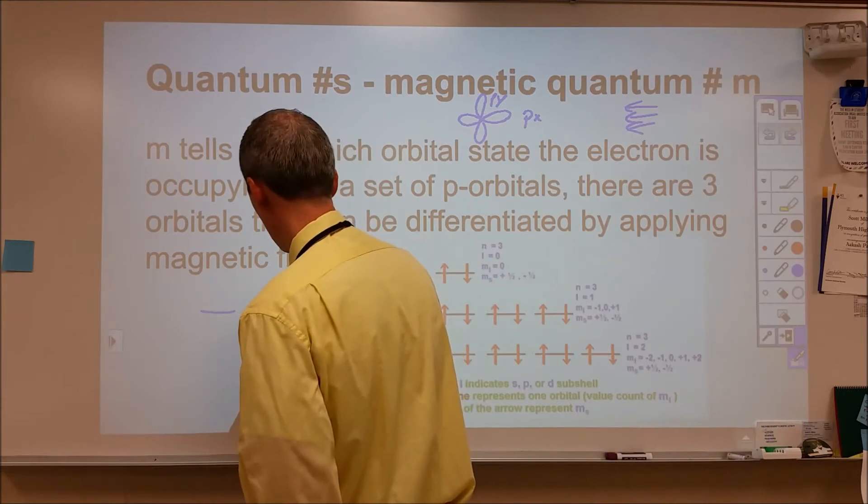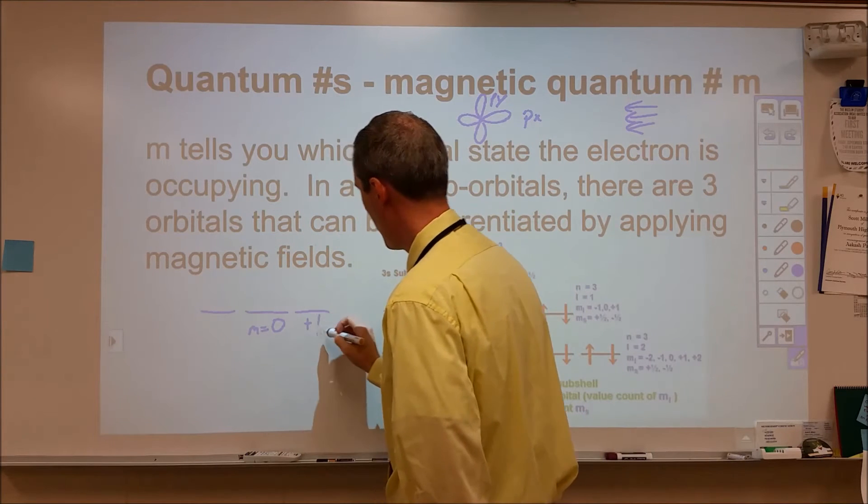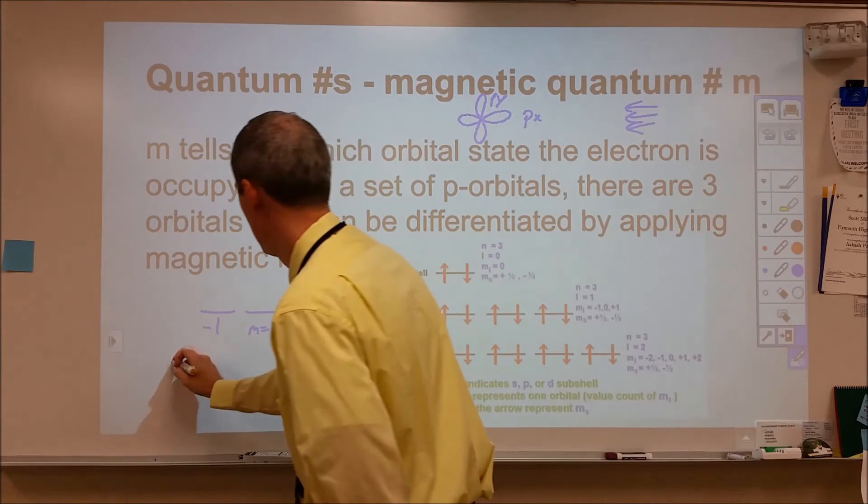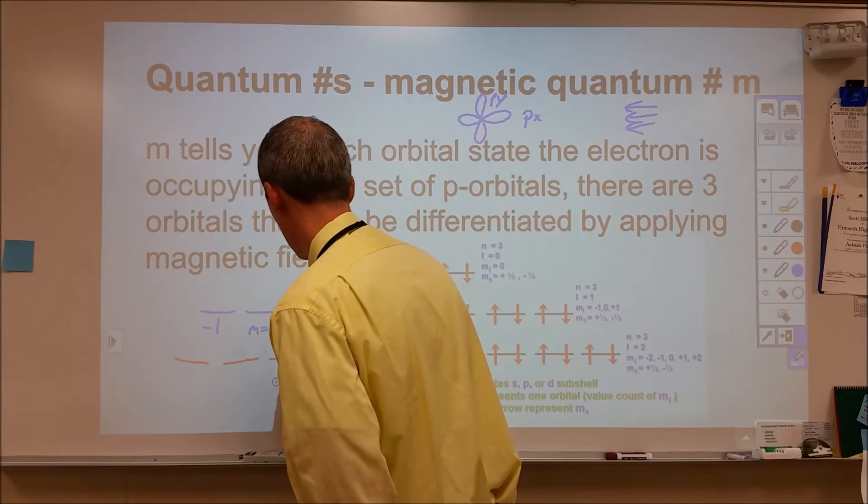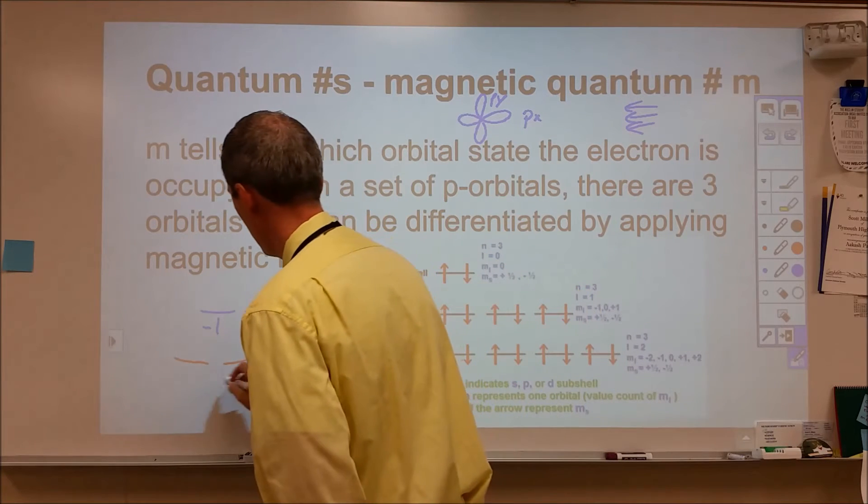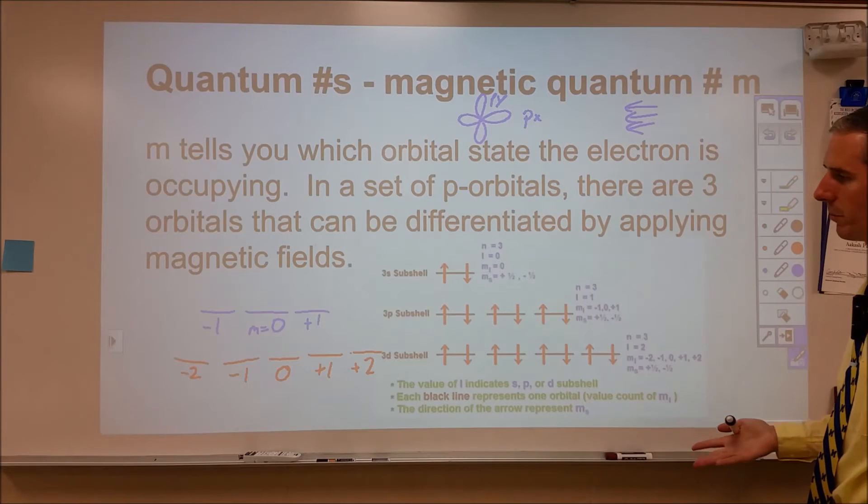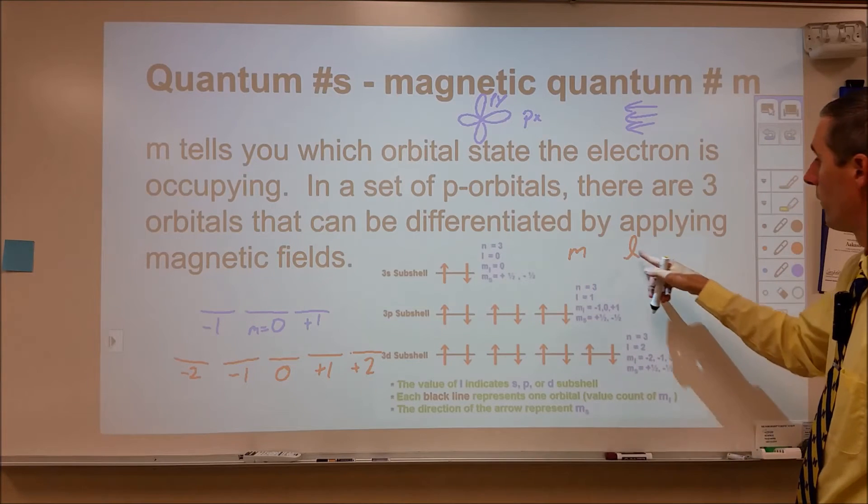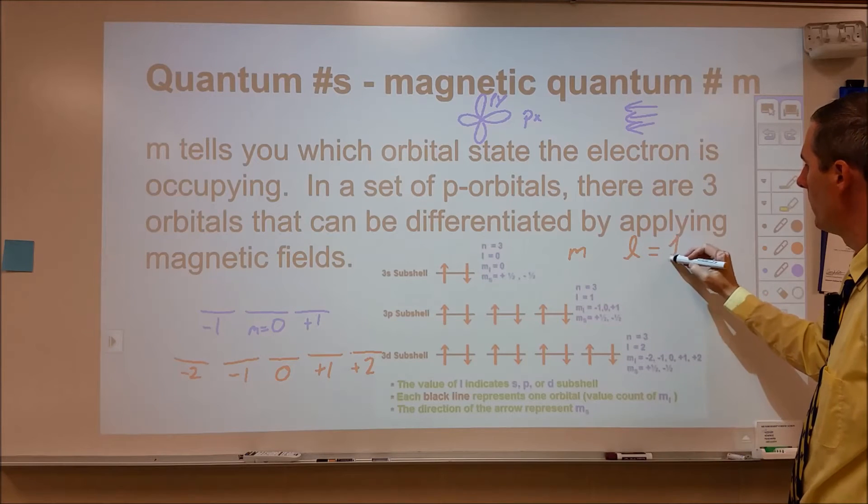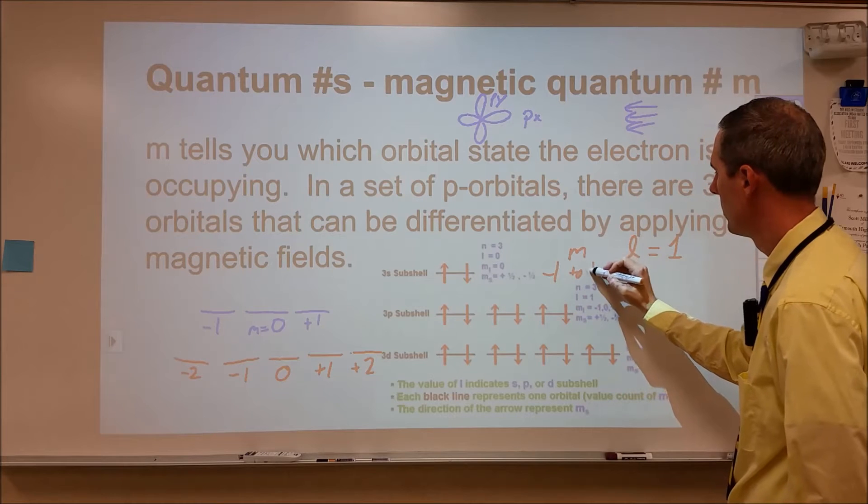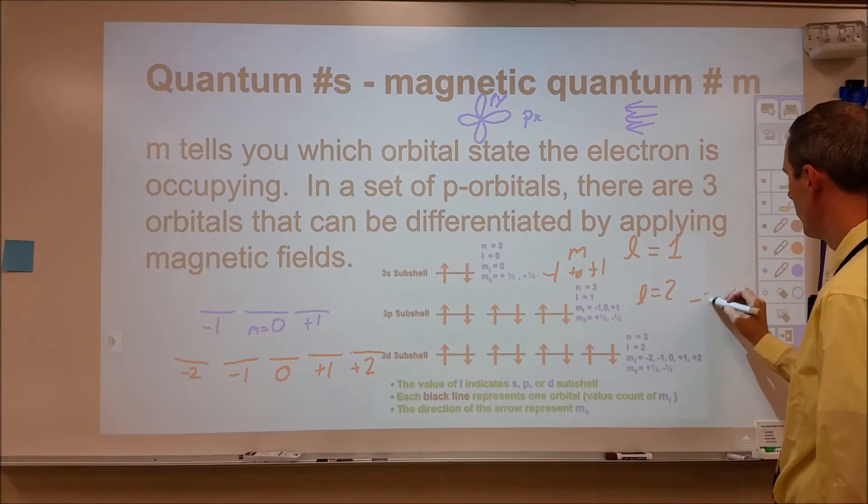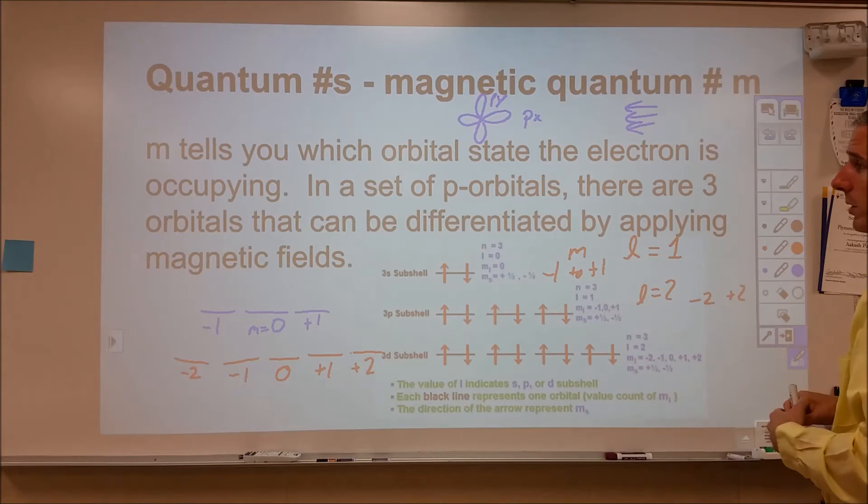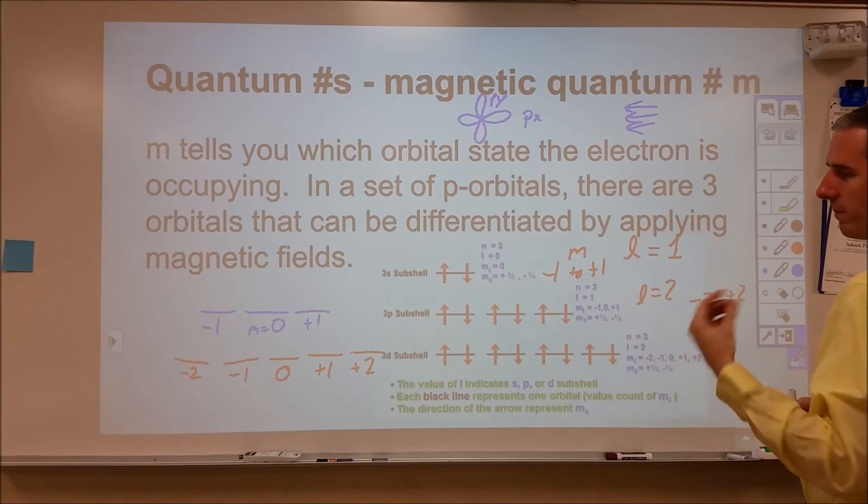And so m is our representation of which of those three there are. Now our way of numbering them is we start with m equal to zero and then we go up and down by ones. So for p orbitals we have a minus one, a zero and a plus one. For a set of d orbitals we have five degenerate orbitals. So we start at zero and then we go up to two and down to negative two. And for f orbitals we go from negative three to positive three. Now there's a relationship between m and l. For l is equal to one we go for an m of negative one to positive one. For l is equal to two our m goes from negative two to positive two. So really we could say that our m values are going to be from negative l to positive l for whatever type of orbital we're describing.